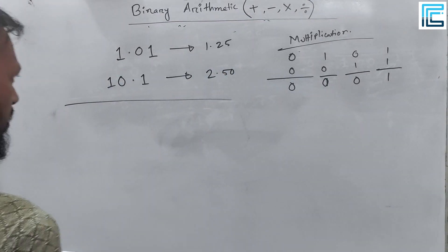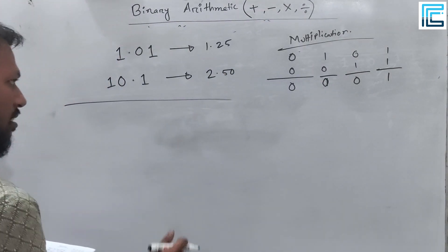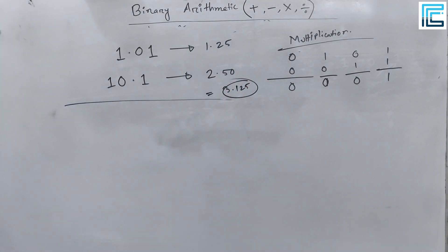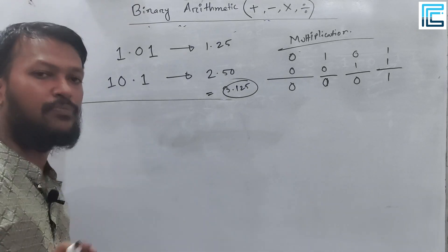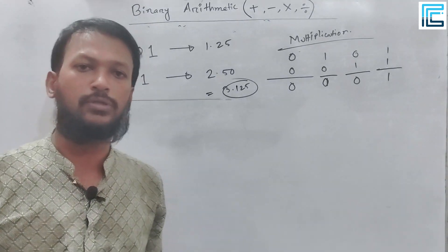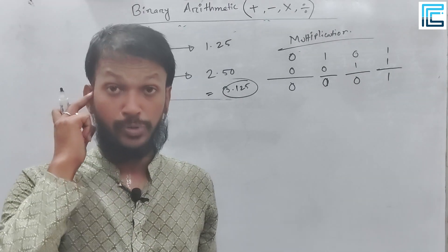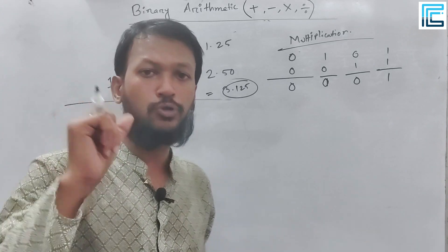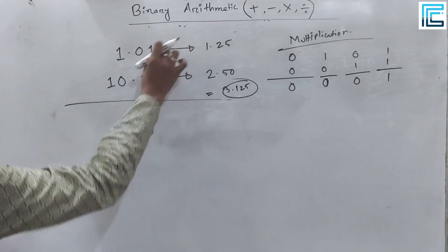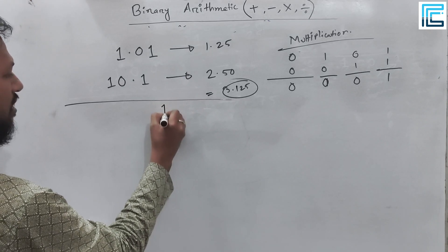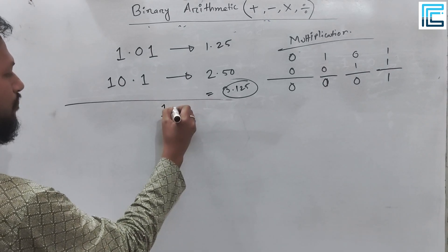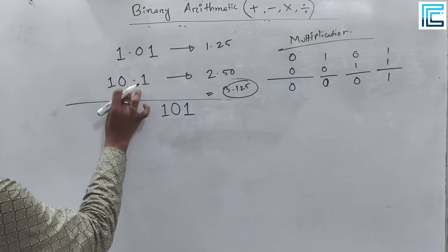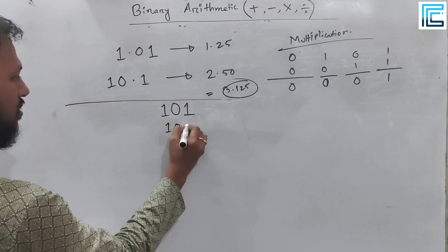I am going to multiply the result. The answer comes to 3.125. So if I remove the decimal, we can do this. The binary representation is 1.0.1, which corresponds to our decimal conversion result.